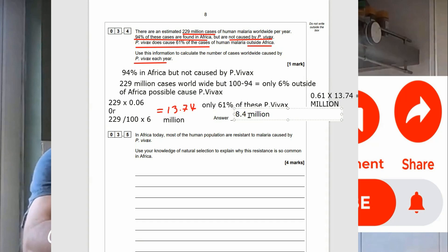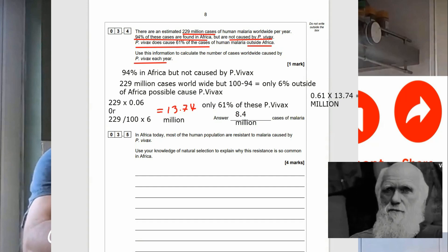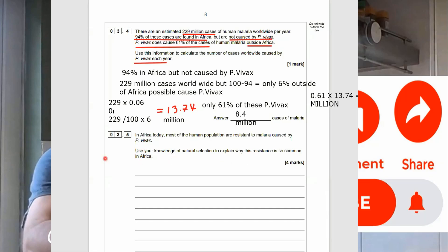Alrighty. We're nearly through. We've got a four mark question now, on natural selection. So, 3.5. In Africa today, most of the human population are resistant to malaria caused by the P-vivax. Use your knowledge of natural selection to explain why this resistance is so common in Africa.